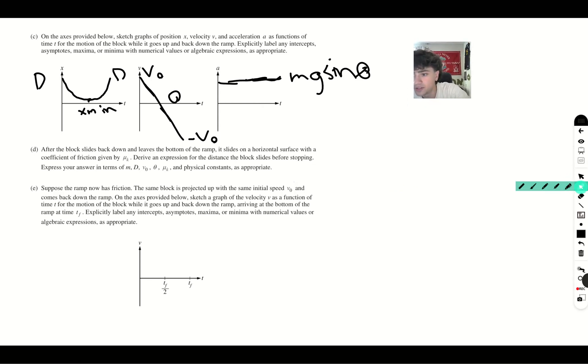So the way we can do this is using work and energy. We don't really have to consider what happened as it goes up and down the ramp. Because we know since there's no friction, no air resistance, all of the energy is conserved. So therefore, the v initial is still going to be v initial. So we start with kinetic energy.